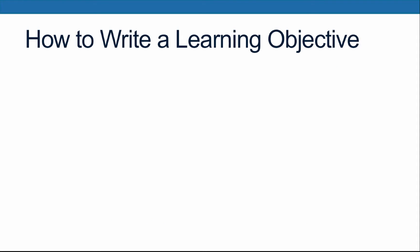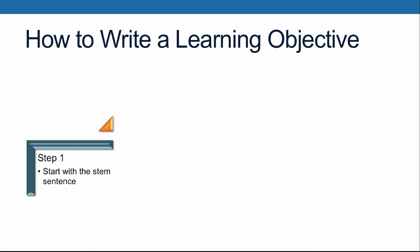Now that we understand Bloom's Taxonomy, let's use what we've learned to construct a measurable learning objective. First, you should start with a stem sentence. All learning objectives contain a stem sentence. They are most often written as the stem sentence with a bulleted list of objectives that follow the stem. For your course modules, you may want to use the stem: 'After completing this module, you will be able to.'